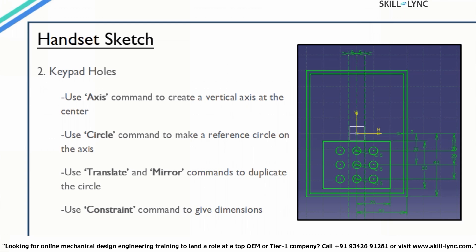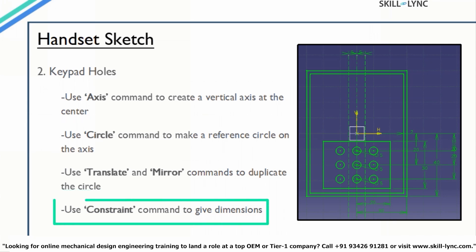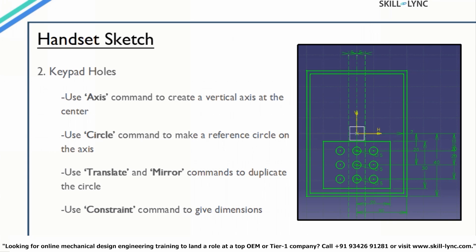Now, let's draw the next part of the sketch, i.e. the keypad circular cutouts. For this part of the sketch, we shall use commands like Axis, Circle, Translate, Mirror, and Constrained. I will first draw a circle at the center of the smallest rectangle and then use the Translate command to create duplicates of the circle above and below the original circle. You will see how useful the Mirror command is for reducing rework.